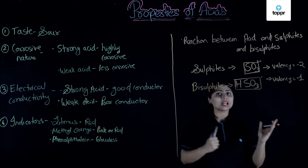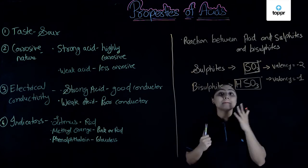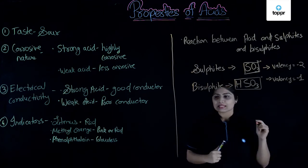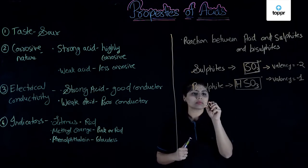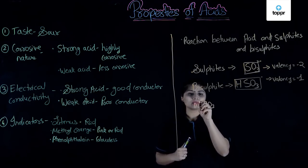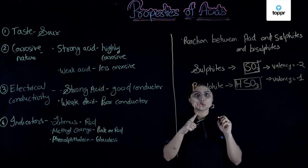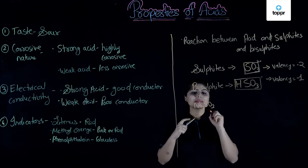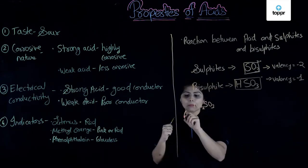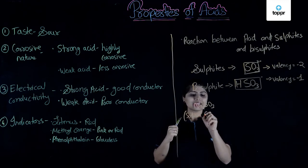They are always combined with metals or some non-metals. Now, suppose if sulphite that is SO3 combines with sodium that is Na. Sodium's valency is one. Sulphite's valency is two. So, when you cross multiply, the formula becomes Na2SO3. The compound is sodium sulphite.